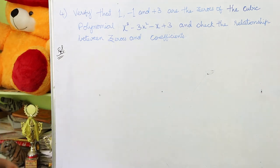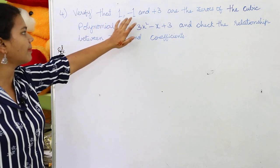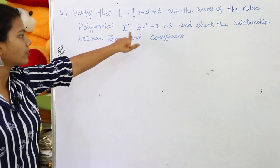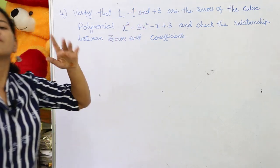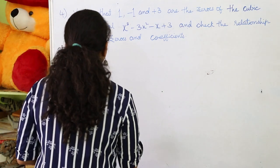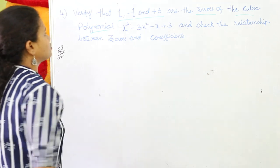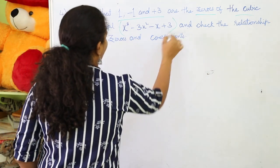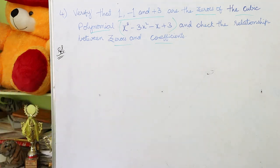Let's start with the fourth question: verify that 1, -1, and +3 are the zeros of the cubic polynomial p(x) = x³ - 3x² - x + 3, and check the relation between zeros and coefficients. We can divide this question into two parts: first, verify that these three values are the zeros of the cubic polynomial, and second, check the relationship between zeros and coefficients.